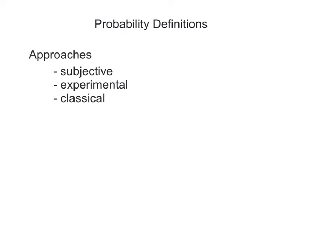There are several approaches to probability including the subjective, experimental, and classical approach. The subjective is one based on intuition which you probably use all the time — it's when you say things like that probably will happen or that probably is not likely to happen. The problem with subjective is sometimes our intuition is wrong, and we will do some examples where our intuition does not necessarily serve us well.